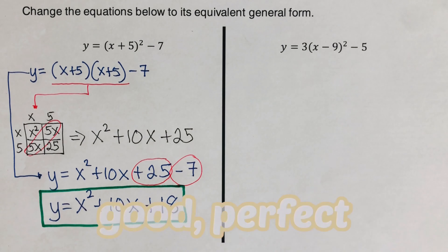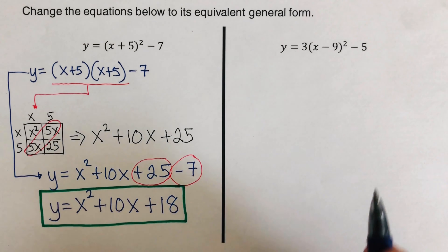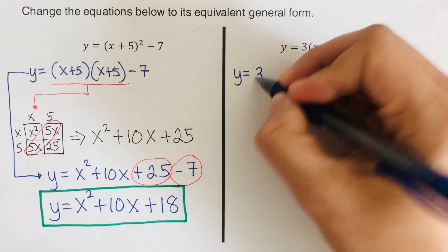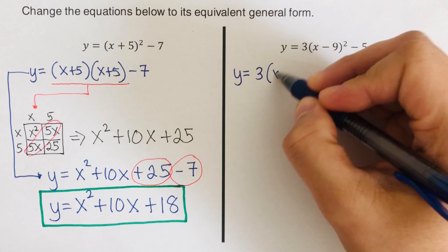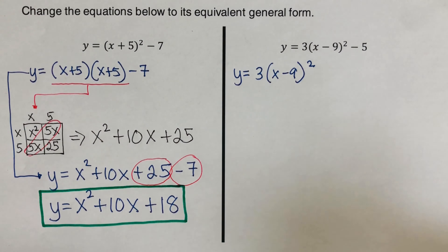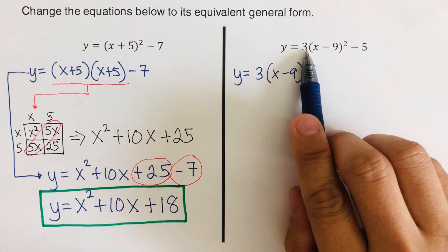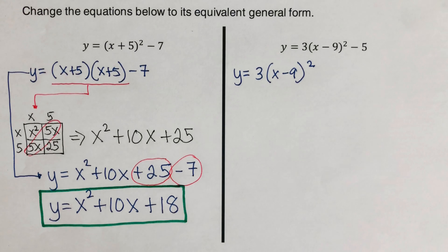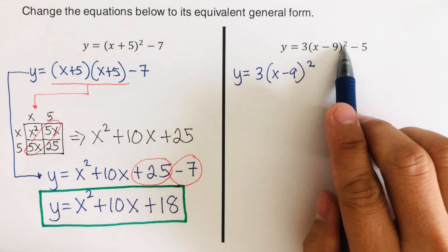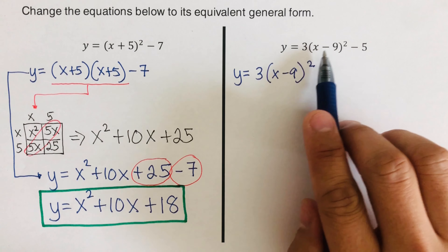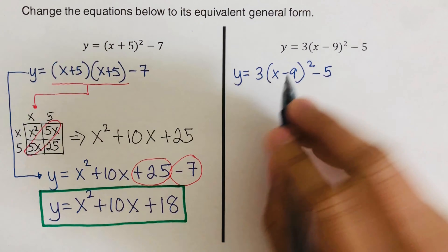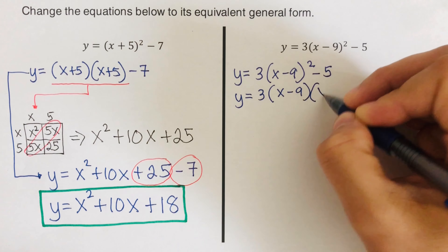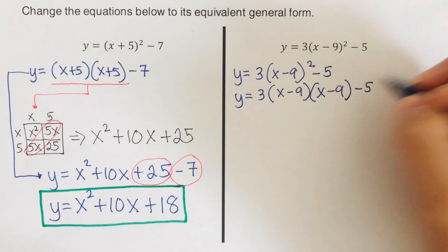Let's move on to the next one. Again, we first expand the squared term. The equation is y equals three times (x minus nine) squared minus five. Others sometimes mistakenly distribute the three directly to x and to negative nine, but that is incorrect — you cannot distribute through a squared binomial without expanding it first.